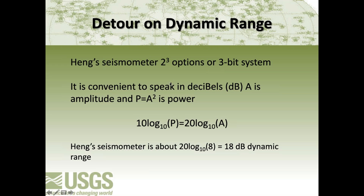We can encode this information in decibels. We take the power of our signal, take log base 10, and multiply by 10 to get dB — or for amplitude, we use 20 log base 10, so the units are the same whether speaking in power or amplitude. For the Hang seismometer with about eight amplitude options, we put it into the formula and get an 18 dB dynamic range system.